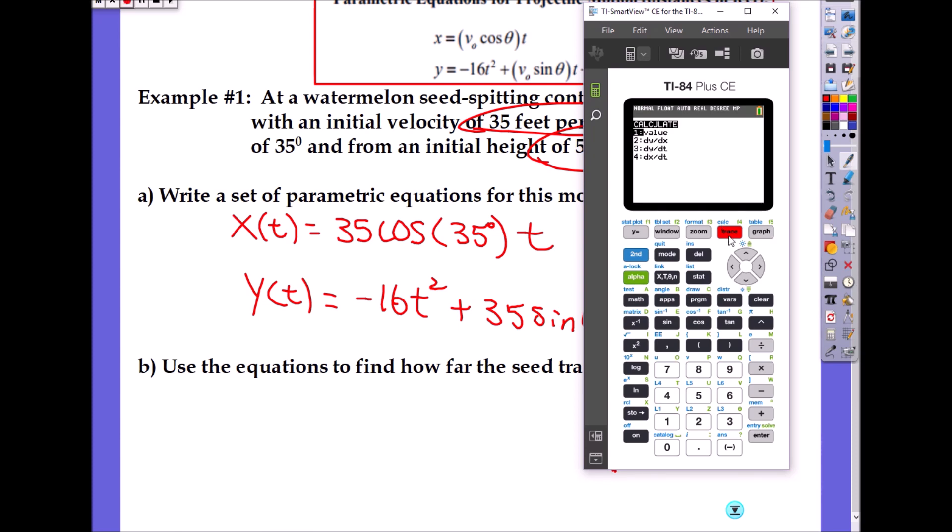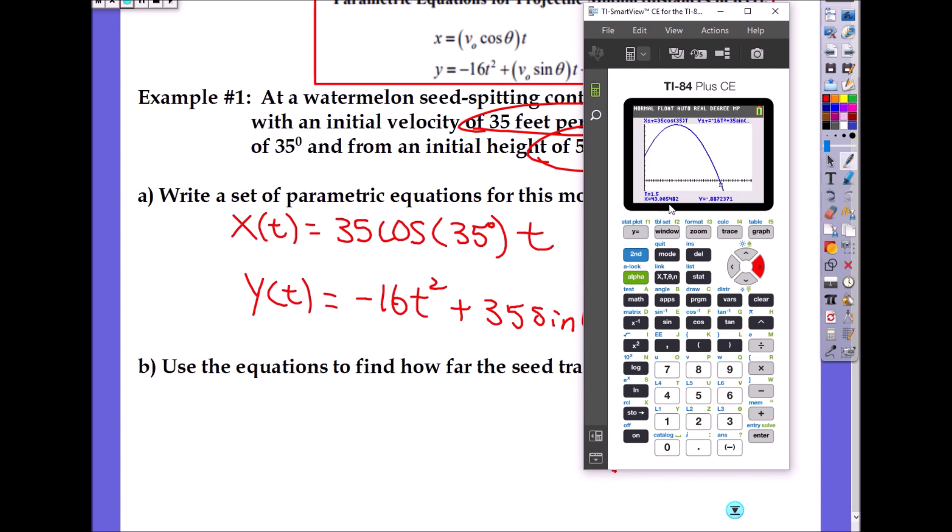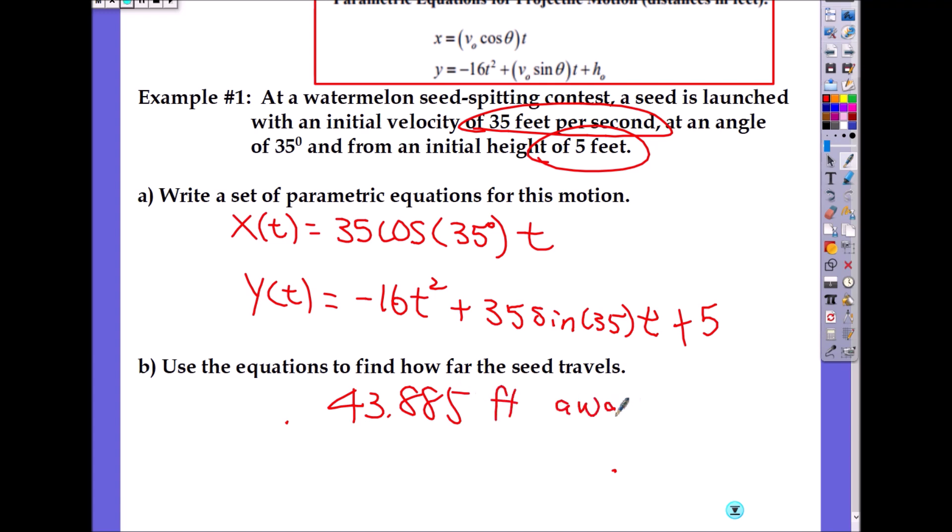Just hit trace and get closer to when y equals zero. Find the closest value—is 1.7 closer to zero or negative 0.88 closer? Negative 0.88. So we're going to use this as our reference point. How far did it travel? 43.885 feet. When does it hit the ground? In 1.5 seconds. I'll write 43.885 feet away.